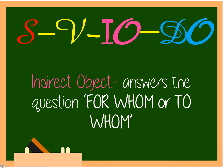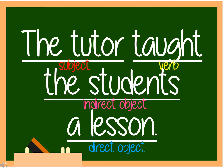The third type is Subject-Verb-Indirect Object-Direct Object, or the SVIODO pattern. In this pattern, the indirect object is added. The indirect object answers the question 'for whom' or 'to whom.' For example, 'The tutor taught the students a lesson.' The tutor is our subject. Taught is our verb. The students is our indirect object.